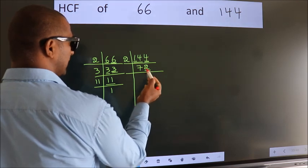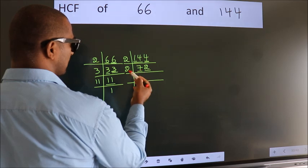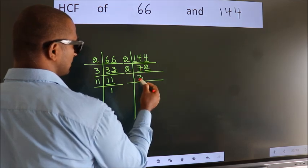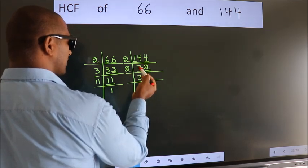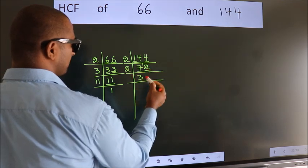Last digit 2, even, so take 2. First number 7, a number close to 7 in 2 table is 2 times 3 is 6. 7 minus 6, 1, 1 carried forward 12. When do we get 12 in 2 table? 2 times 6, 12.